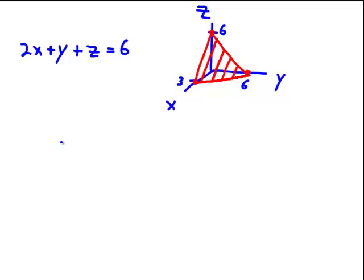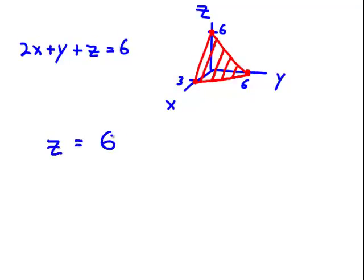What we first need to do is solve for z so that I can think of this plane as a function of x and y. If I do that, I get z equals 6 minus 2x minus y. So I can call that f of xy if I like. So z, f, same thing.